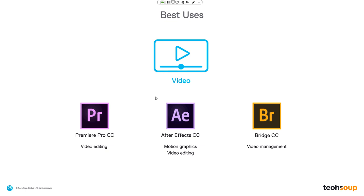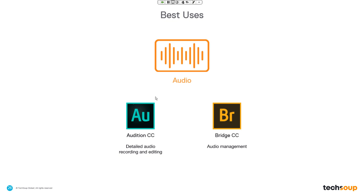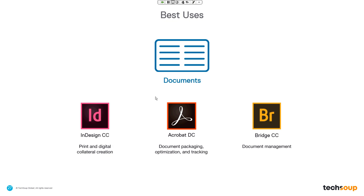For audio, Audition is the major app for both recording and editing — whether you are creating podcasts or adding audio to video. And Bridge handles organizing those files as well. For creating documents, InDesign assembles and lays out all your content — images, copy, everything. Then you can use Acrobat DC, which is also included with Creative Cloud, to package, optimize, and track your documents. Bridge is again great for managing those documents.